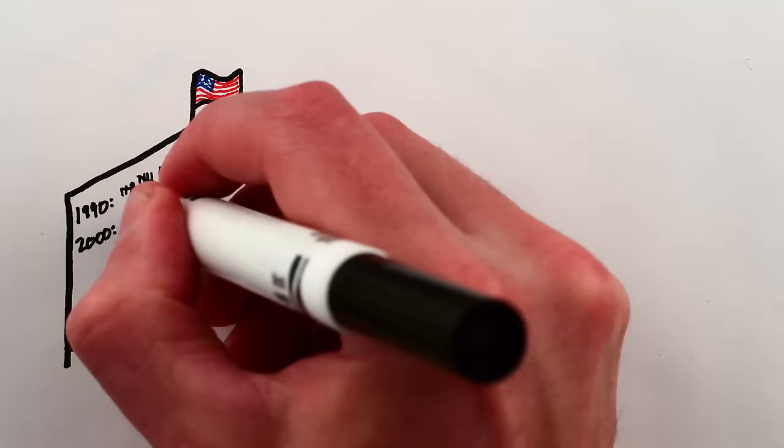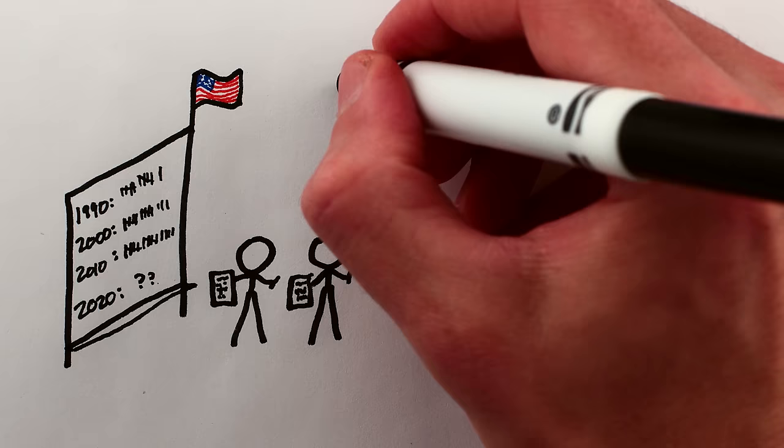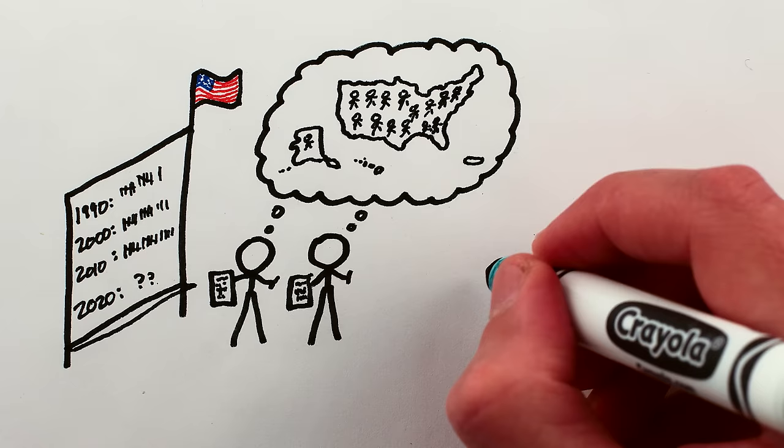Every 10 years, the U.S. Census Bureau surveys the American population. The ambitious goal is to count every person currently living in the entire United States of America and collect information about them like age, sex, race, and ethnicity.